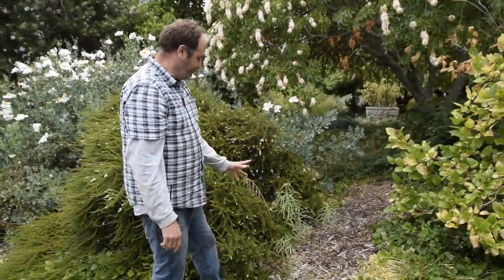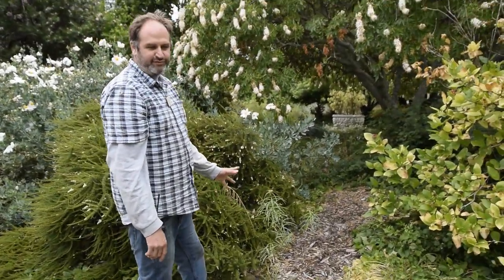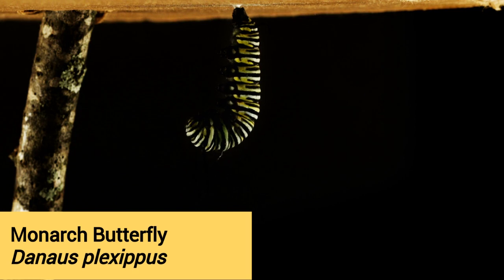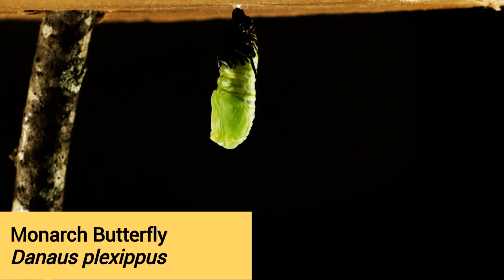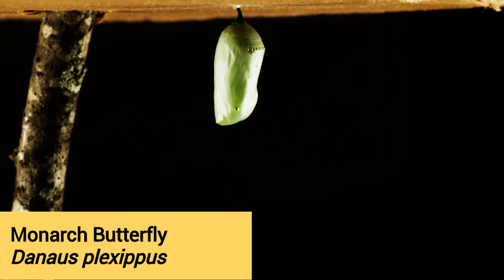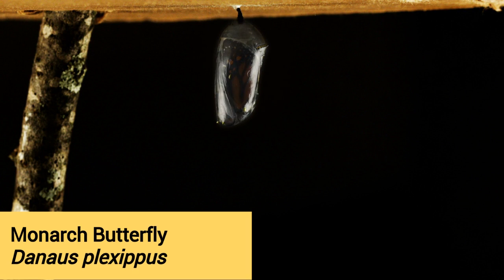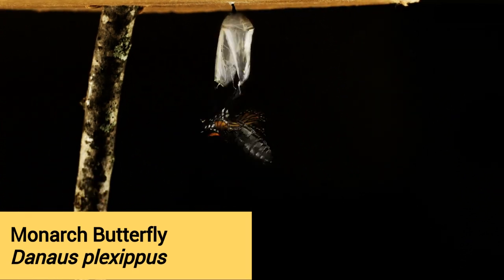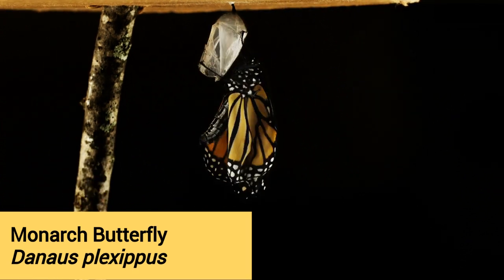This will be full of monarch caterpillars before too long. And then they will have a whole bunch of stuff to nectar on, so they pretty much can live out the whole little life cycle right here in this part of the Arboretum.